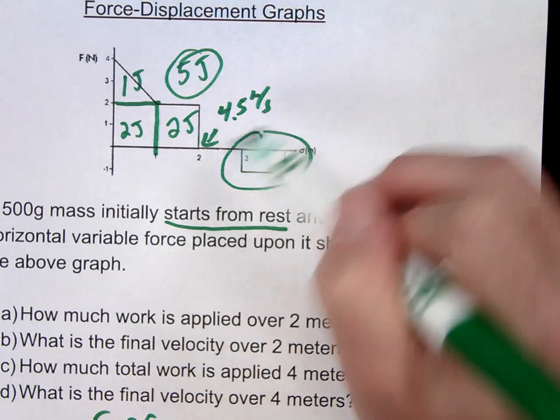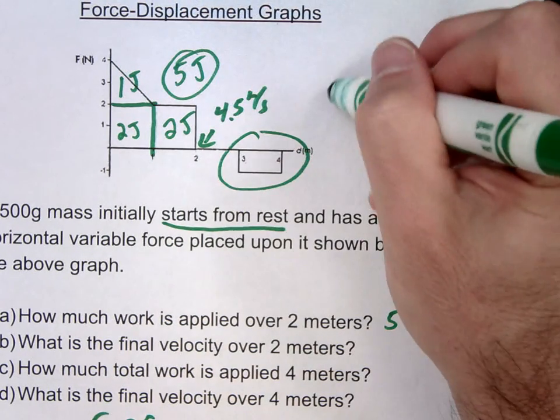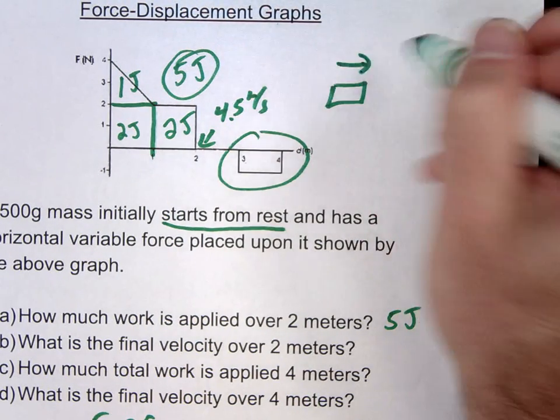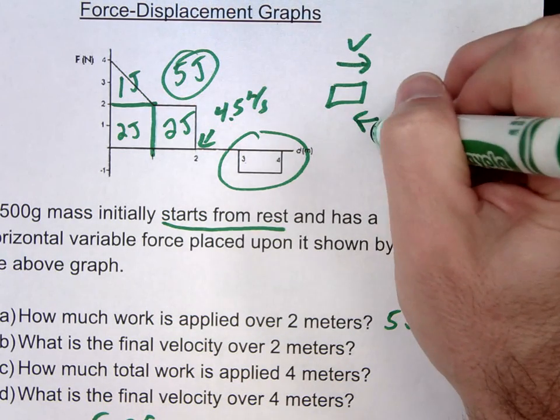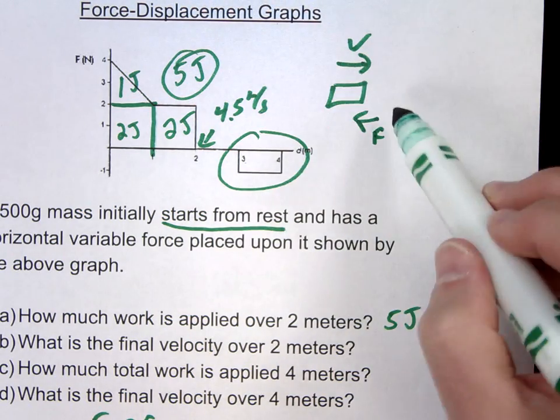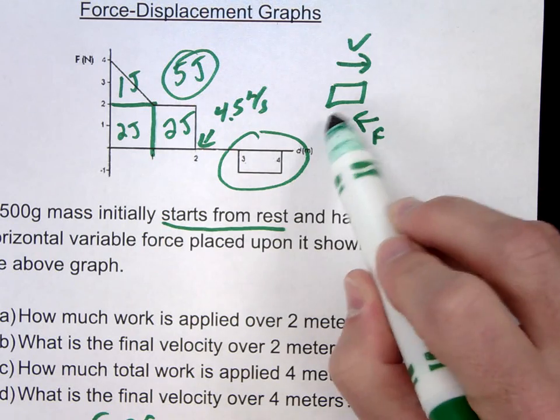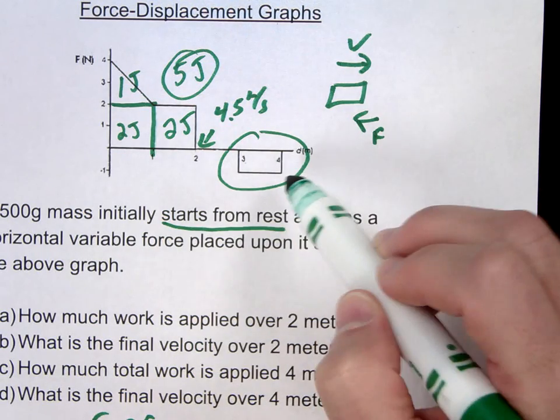So notice we have a negative force here, which means the force is opposing the motion. So if we have an object with a velocity moving this way, we're going to apply a force this way. So we're essentially doing work on this object.